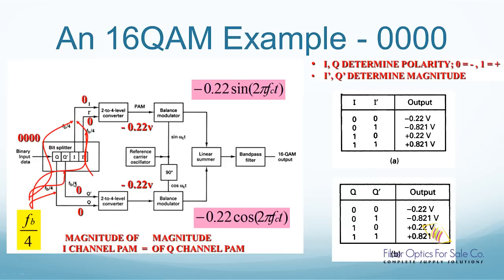Q and Q apostrophe is also 00, so the other carrier wave output is negative 0.22 cosine 2 pi fc t.